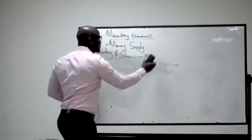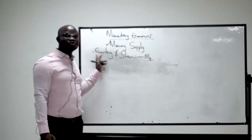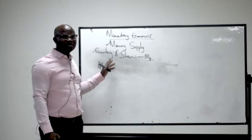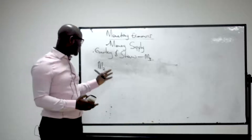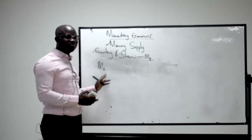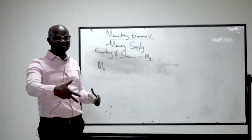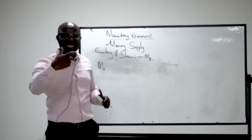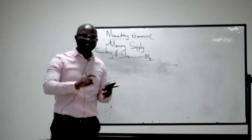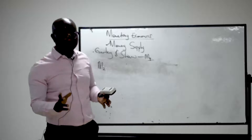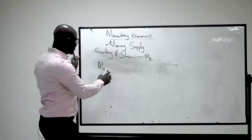These are the three scholars that explain money supply. M1 is the narrowest, M2 is broader, and M3 is the broadest. Any country can use M1, M2, or M3. Currently in Nigeria we use M2, which is the currency in the hands of the public plus demand deposit plus the fixed deposit of the customer with the commercial bank or financial institution.